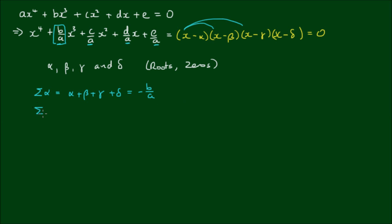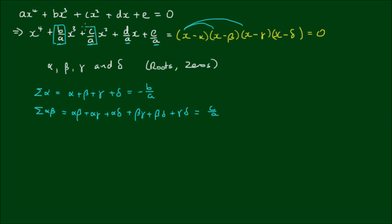The sum of the paired combinations of the roots — alpha·beta plus alpha·gamma plus alpha·delta plus beta·gamma plus beta·delta plus gamma·delta — is equal to the positive x squared coefficient, that is, c/a.